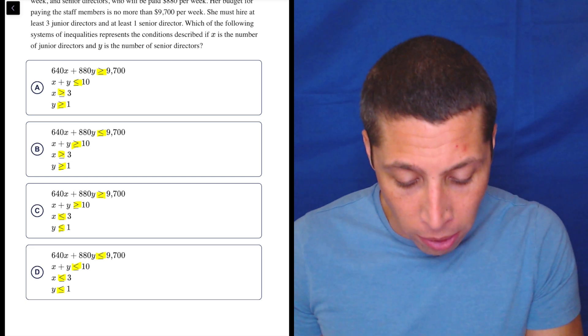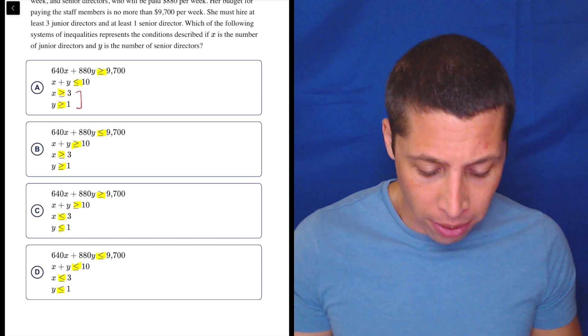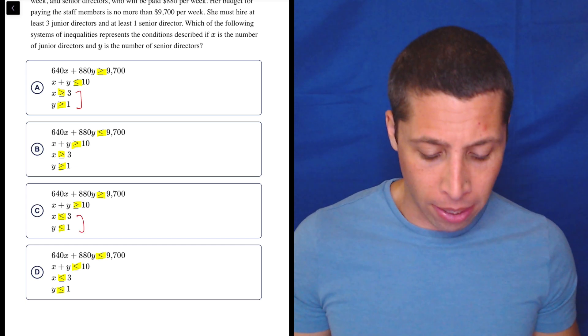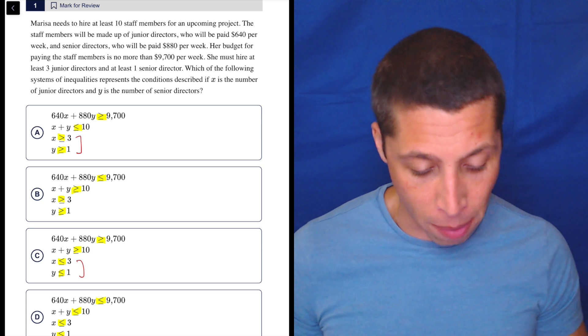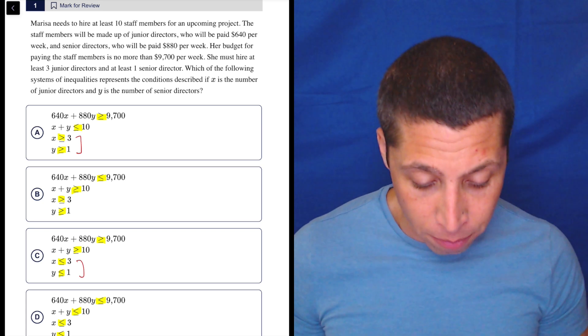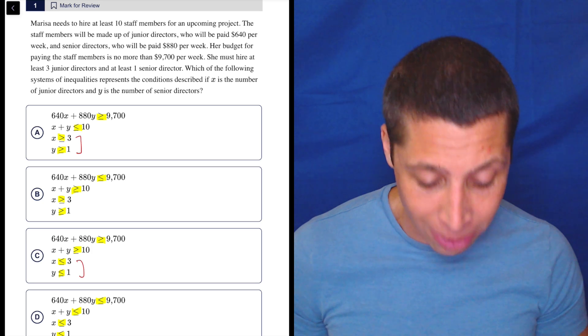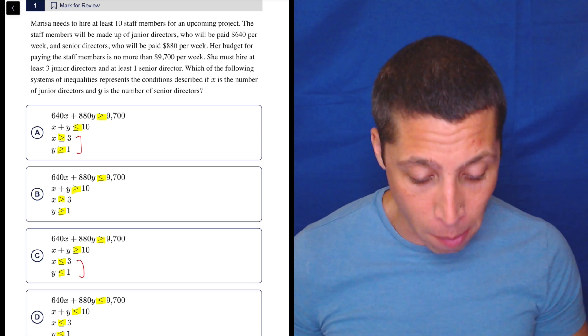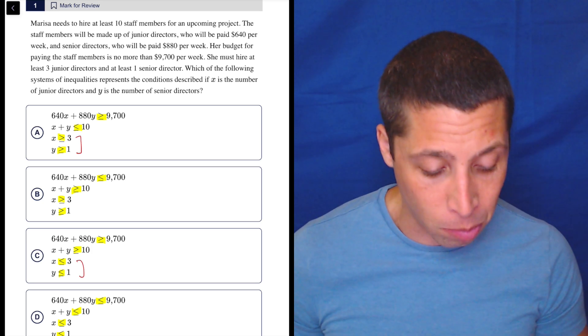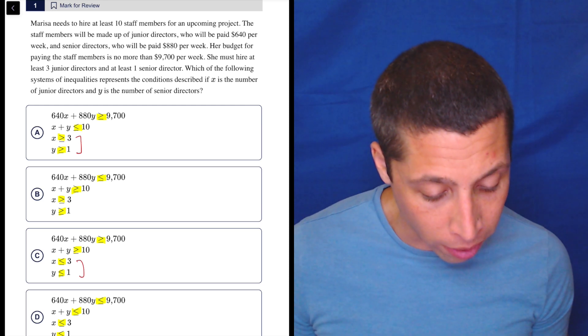So let's start with these ones. Because that seems simpler. X, whatever that is, has to be greater than 3 or less than 3. Let's just see what they say. So Marissa needs to hire at least 10 staff members for an upcoming project. The staff members will be made up of junior directors who will be paid $640 per week and senior directors who will be paid $880 per week. Her budget for paying the staff members is no more than $9,700 per week.